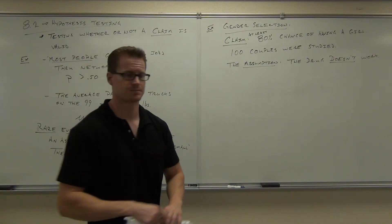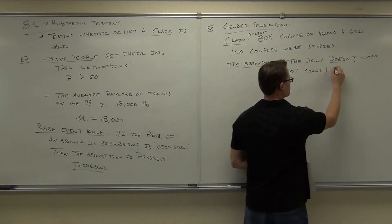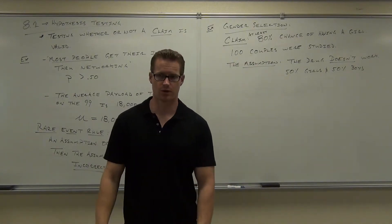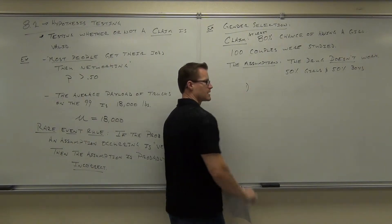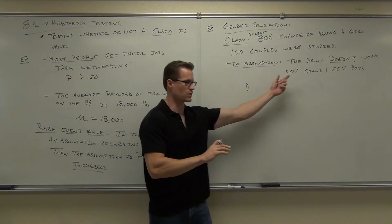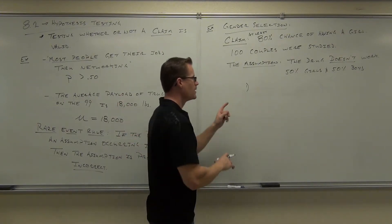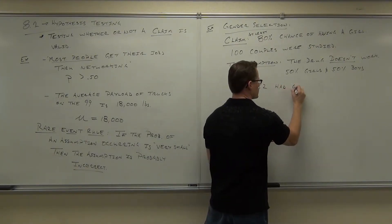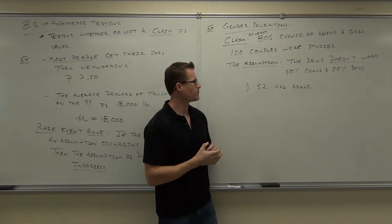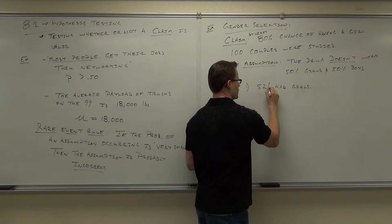So we're going to assume the drug doesn't work. If the drug doesn't work, that means 50% girls and 50% boys. Remember, this is our assumption. Let me give you two cases. Let's say they tested 100 couples. Let's say 52 of them had girls out of the 100.